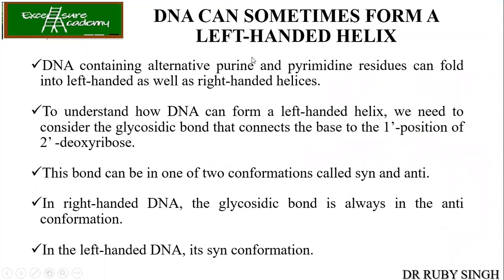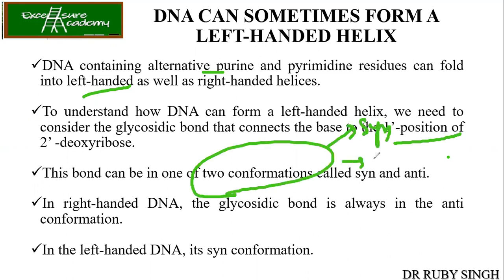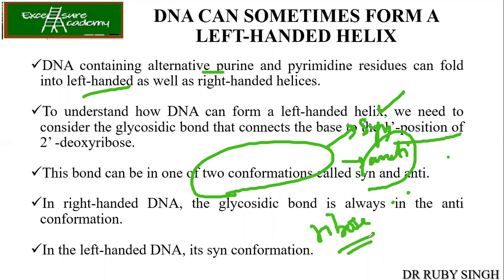DNA can sometimes form a left-handed helix. DNA containing alternating purine and pyrimidine residues can fold into a left-handed conformation. To understand this, you need to know about two conformations of the glycosidic bond: syn and anti. In the case of B-DNA and A-DNA, the conformation is anti. In the case of Z-DNA, the conformation is syn. A and B-DNA have the anti-conformation of the ribosugar.